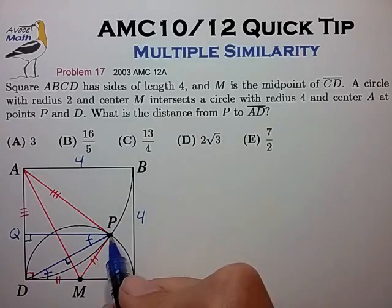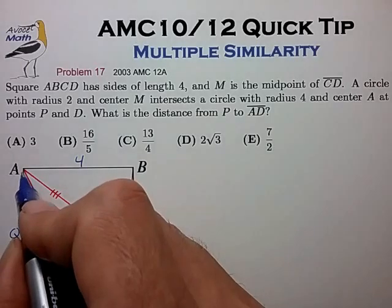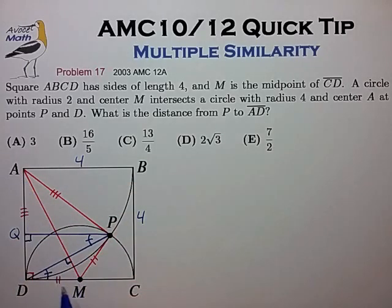And since DP is perpendicular to the hypotenuse AM, DP is essentially an altitude drawn to triangle MDA. And from that, we know that this smaller triangle is similar to this larger triangle ADM.